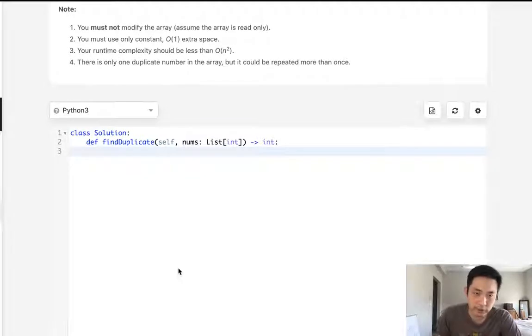To be honest, I've seen this problem before and I already know the solution. It's Floyd's algorithm, otherwise known as the tortoise and hare. And basically what you would do is set two pointers, one called turtle and one called hare, and we'll initialize those at the beginning of the list.